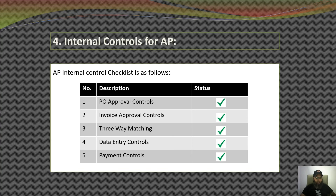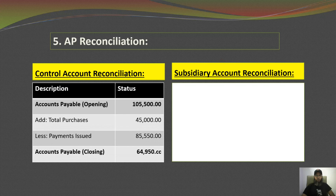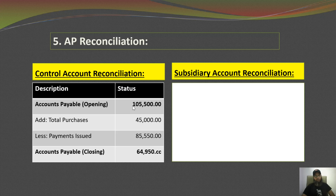In this slide we will see how to reconcile the accounts payable control account and the subsidiary account. For the control account, the formula is: accounts payable opening balance plus total purchases during the month, minus all payments issued during the month, equals the accounts payable closing balance. The opening balance is the balance from the previous month's trial balance. For example, total purchases of 45,000 minus issued payments of 85,550 gives the closing balance for the current month.